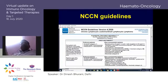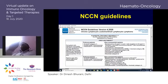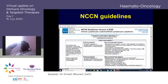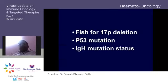The NCCN guidelines show that preferred regimens for both younger and elderly patients are all targeted therapies — none of the preferred therapies is chemotherapy. Western countries have clearly moved to targeted therapies.